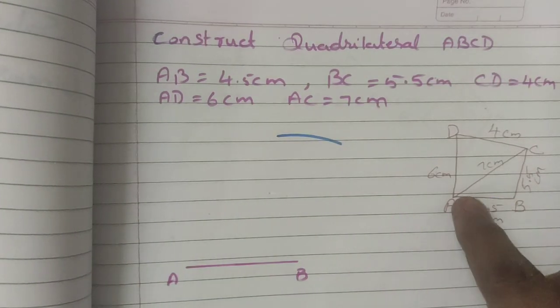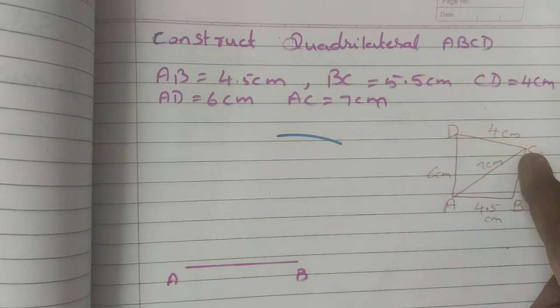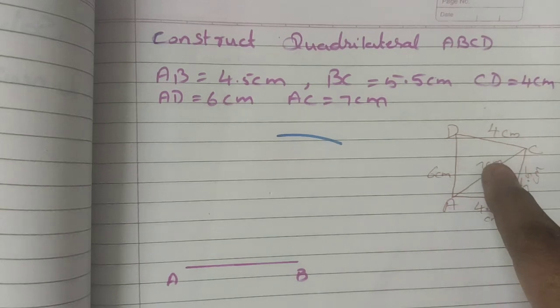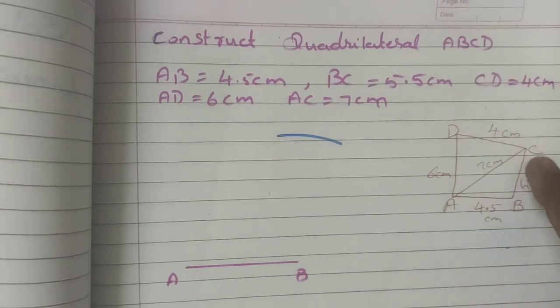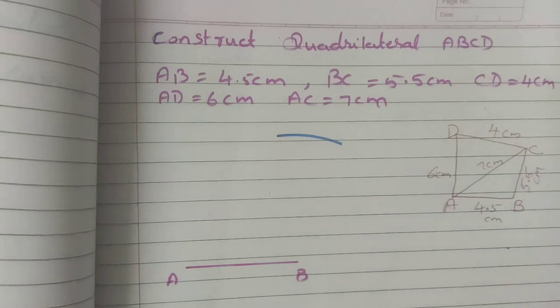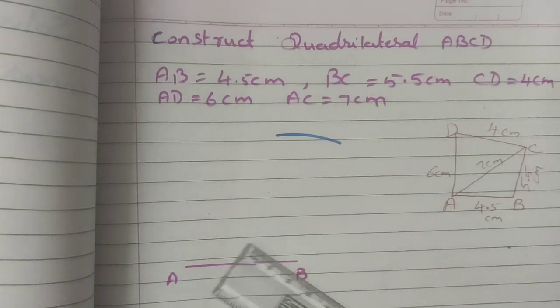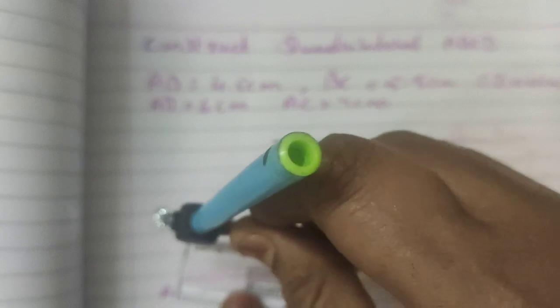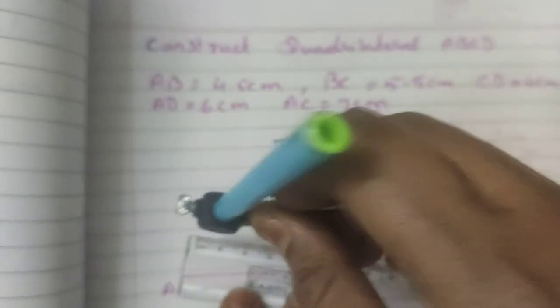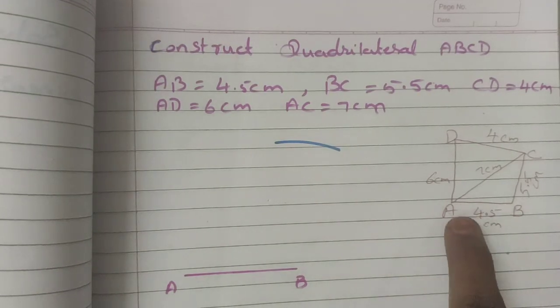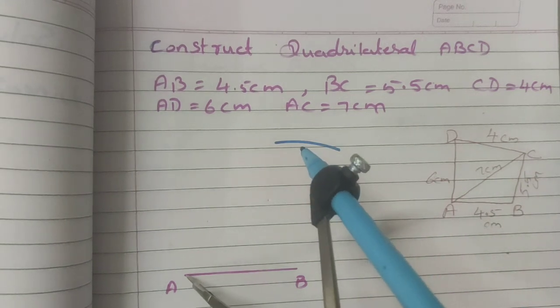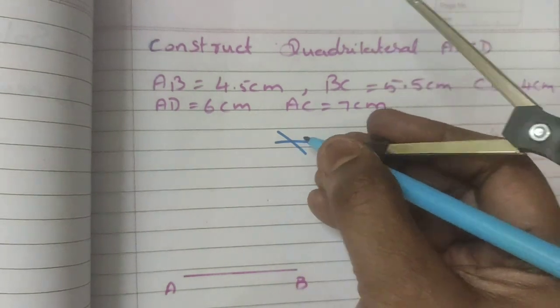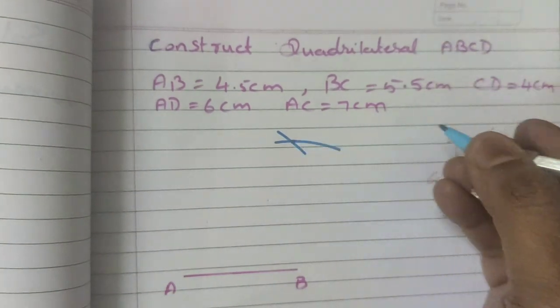Then, what is the diagonal measurement? AC is equal to, because this is like a triangle shape, all the three sides are given. So it is easy to construct first. So the diagonal measurement is 7 cm. As usual, take your compass with 7 cm. Measure in your compass with A as center because AC is 7 cm. With A, keep your compass needle and cut the path. Now this point is exact point is C.